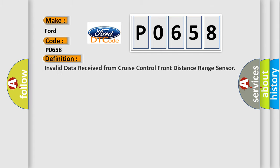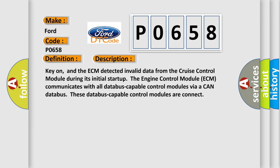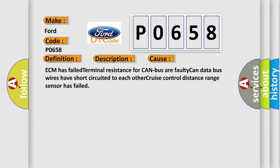The basic definition is: Invalid data received from Cruise Control Front Distance Range Sensor. Key on, and the ECM detected invalid data from the Cruise Control Module during its initial start-up. The Engine Control Module (ECM) communicates with all database-capable control modules via a CAN bus. This diagnostic error occurs most often in these cases: ECM has failed terminal resistance for CAN bus; faulty CAN data bus wires have short-circuited to each other; or the Cruise Control Distance Range Sensor has failed.